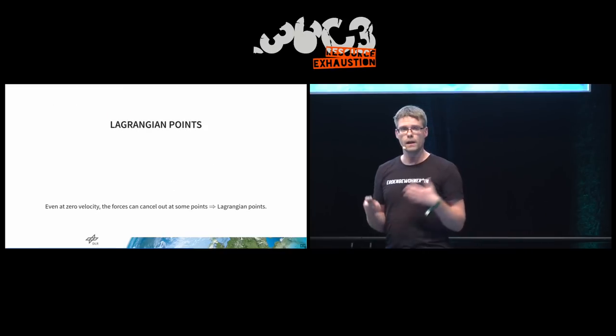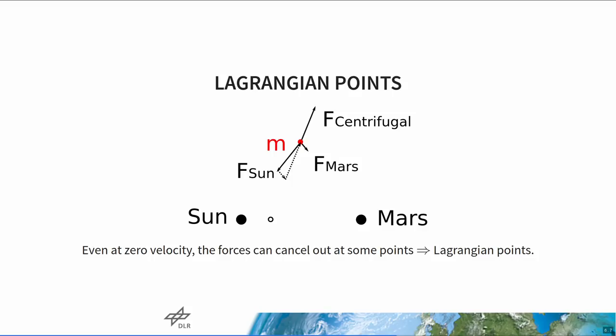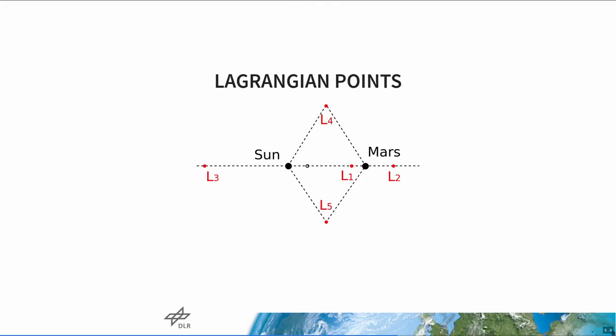One thing we can ask is: if we put a spacecraft into the system without any velocity, is it possible that all the forces cancel out? It turns out yes — those points are called Lagrangian points. If there's zero velocity there's no Coriolis force, so we have only three forces, and it's possible they all cancel out. There are five Lagrangian points: L4 and L5 are at equilateral triangles with the Sun and Mars, and L1, L2, and L3 are on the line through Sun and Mars. If you put a spacecraft precisely at L1 without any velocity, it will actually stay at the same position relative to Sun and Mars.